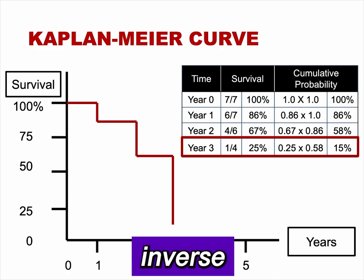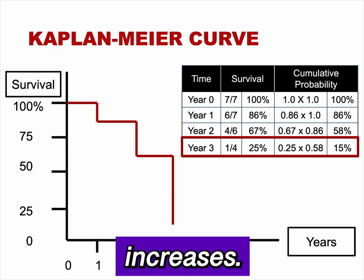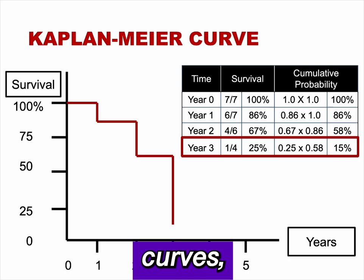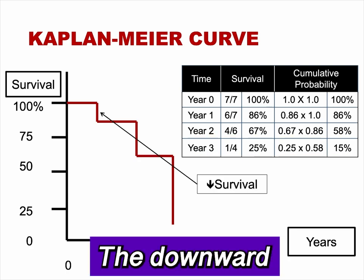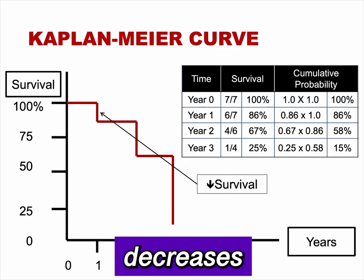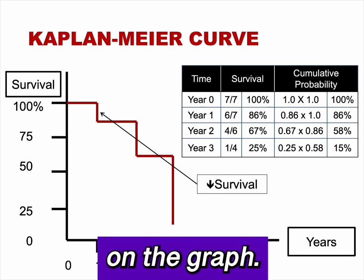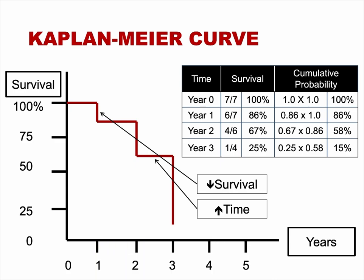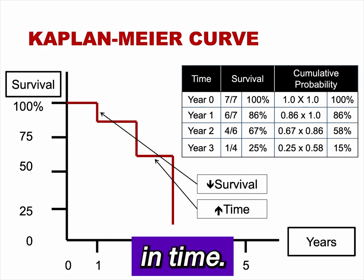Note that the direction of the curve is downsloping. There is an inverse relationship between survival and time — survival decreases as time increases. The curves are not actually curves, but follow a stepwise progression. The downward portion of the curves represents a decrease in survival, documented only at each year interval on the graph. The horizontal portion of the curve represents an increase in time; these steps span the time interval.